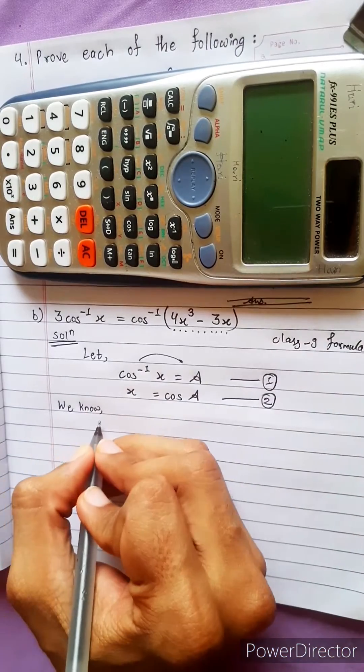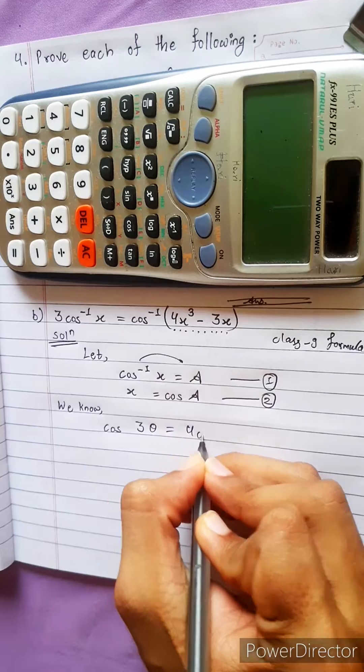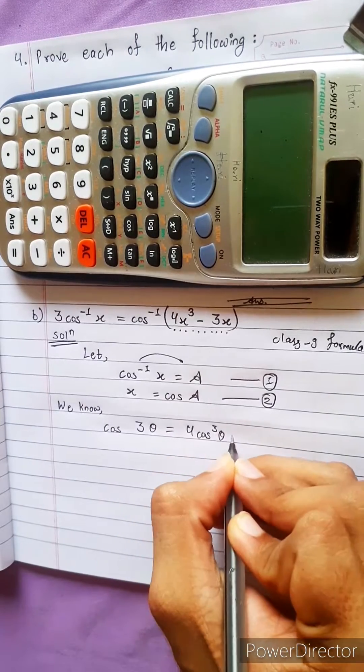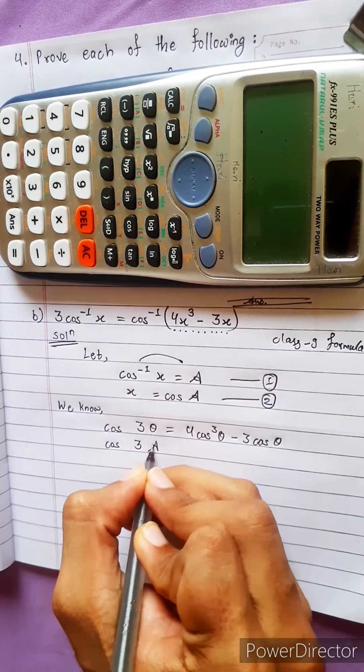Cos 3 theta equals to 4 cos cube theta minus 3 cos theta. But here no theta, here is A, so write here: 3A equals to 4 cos cube A minus 3 cos A.